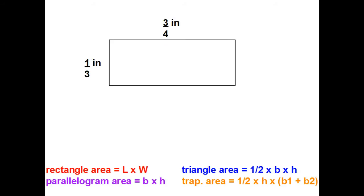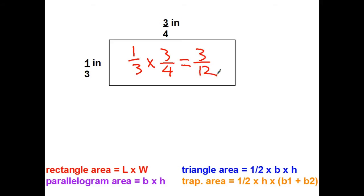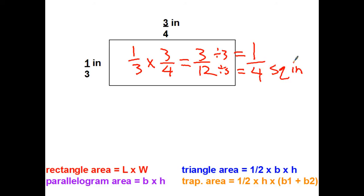Now for the area: length times width — one-third times three-fourths. Top times top is 3, bottom times bottom is 12. Three-twelfths can be simplified — both divisible by 3: three divided by 3 is 1, twelve divided by 3 is 4 — giving one-fourth square inches. Notice that with fractions, the perimeter number is usually bigger because adding fractions increases the value, while multiplying fractions keeps making the number smaller and smaller.